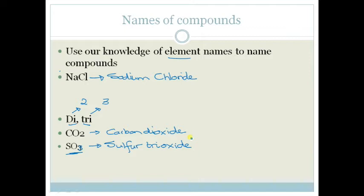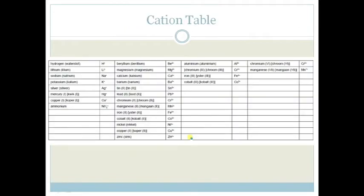Right. So we can see that we can use our element names to name compounds. But sometimes things get a little bit more complicated when we have ions. Now what is an ion? An ion is an atom that has either lost or gained electrons. In other words, it's no longer neutral. And in this case, this is a cation. And cations are positive ions. Which means that they have lost electrons. Because electrons are negative. So a cation table is a table of ions, of atoms basically, that have lost electrons to become positive. And therefore they are cations.